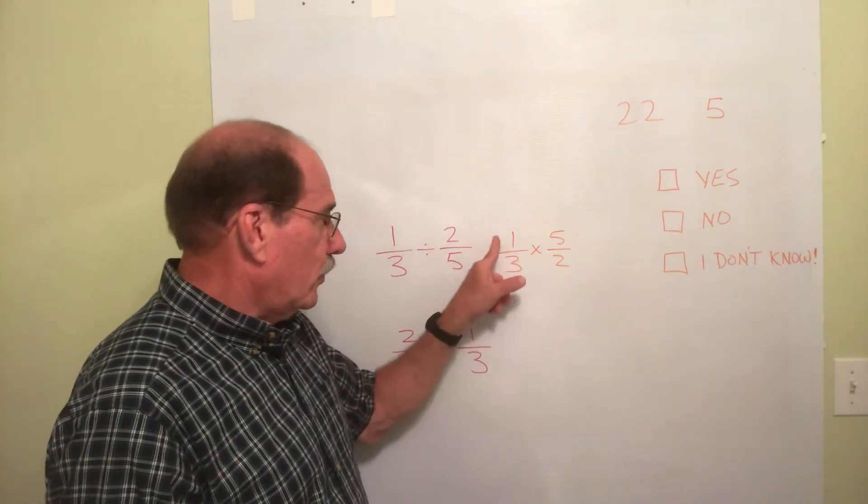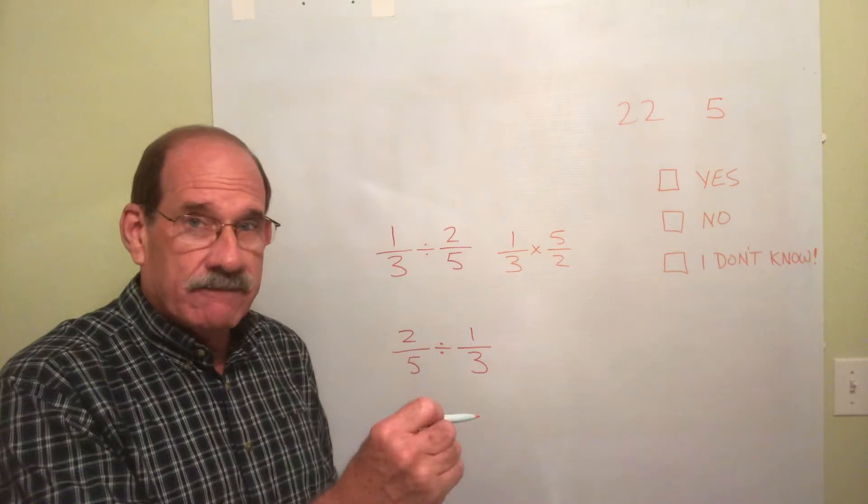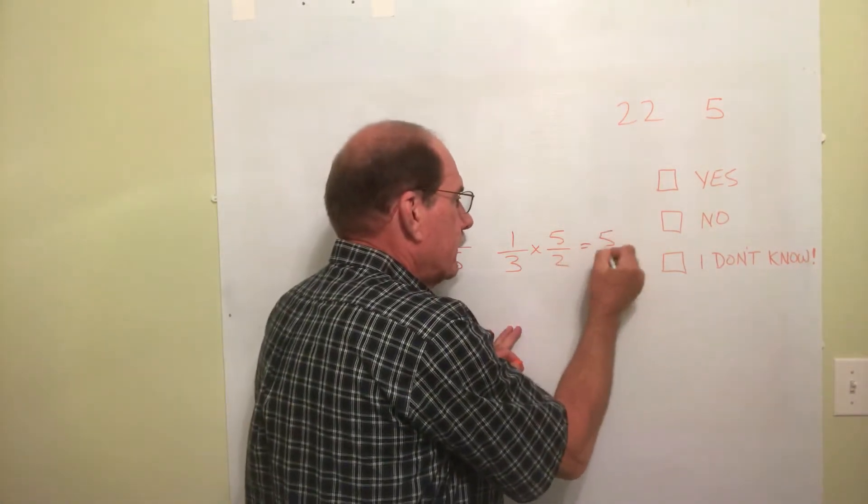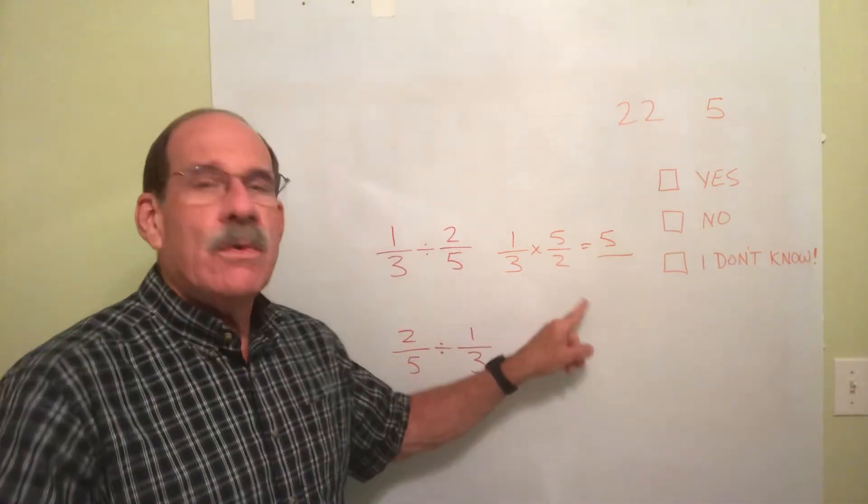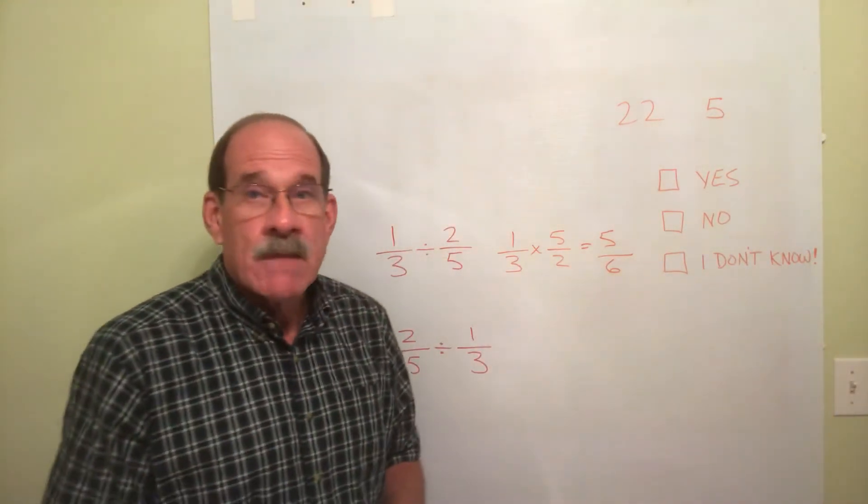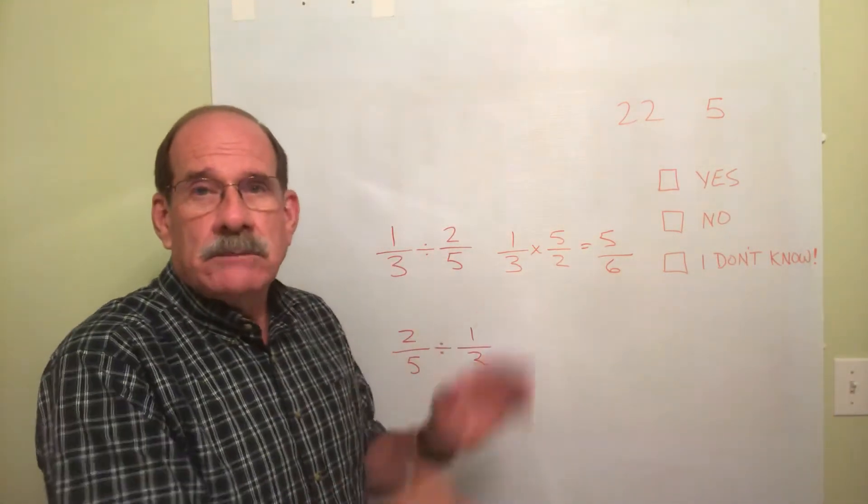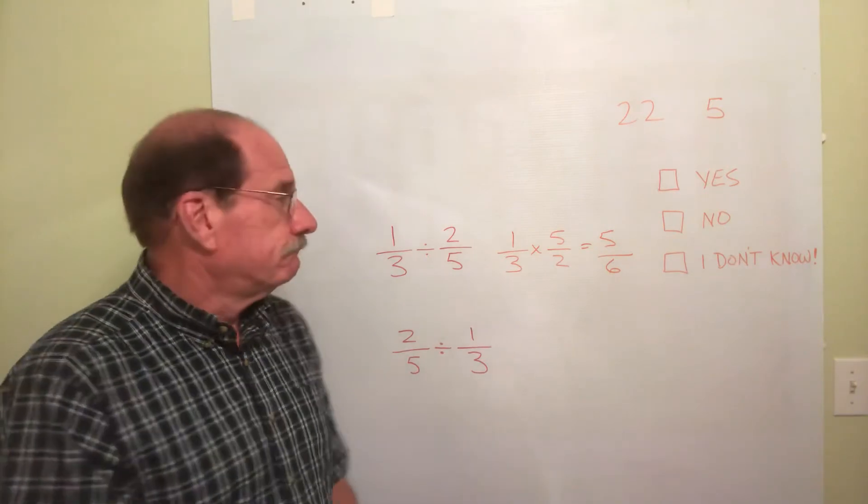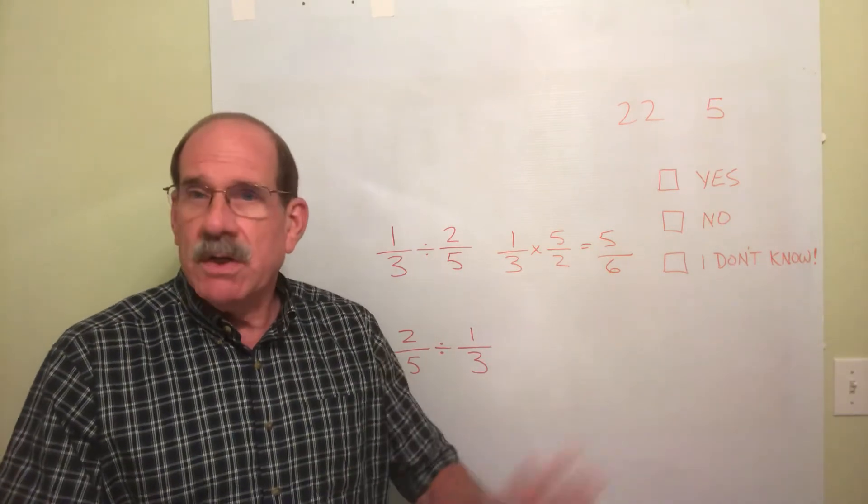Multiply the two top numbers. 1 times 5 is 5. 3 times 2 is 6. There we go. That's the answer. Anything to do with that? No. Can you reduce it? No. It's already a proper fraction. We're good. That's the final answer.